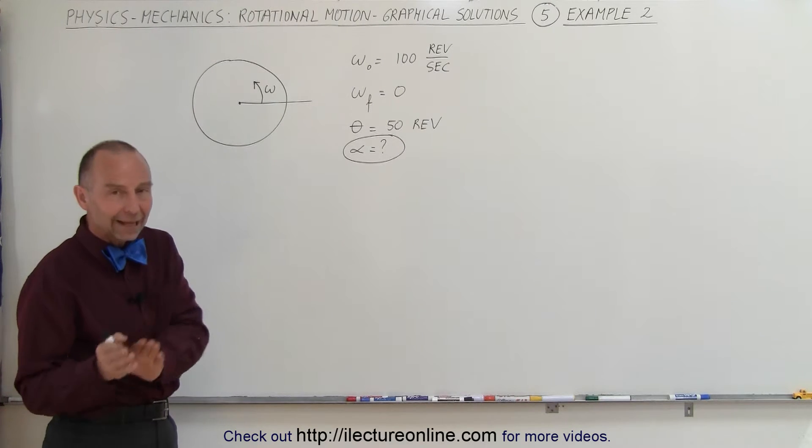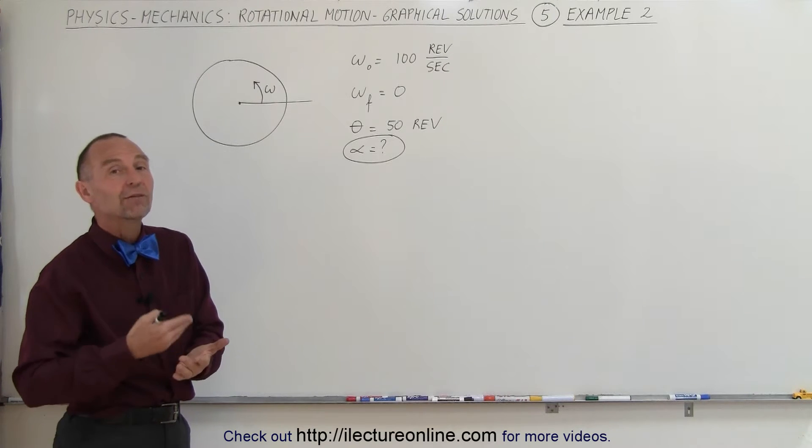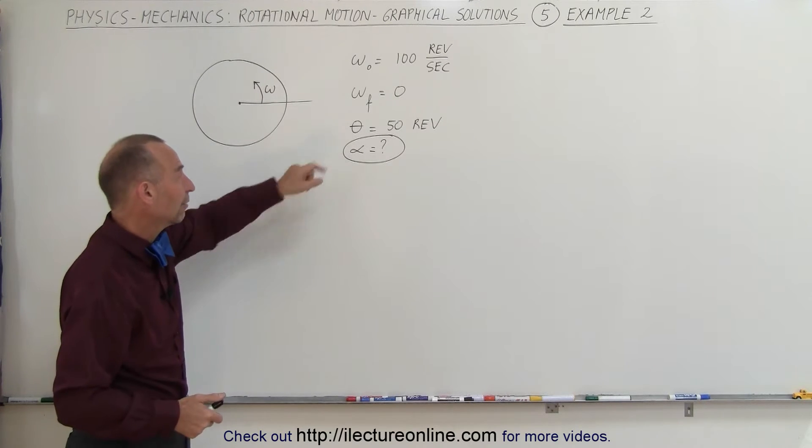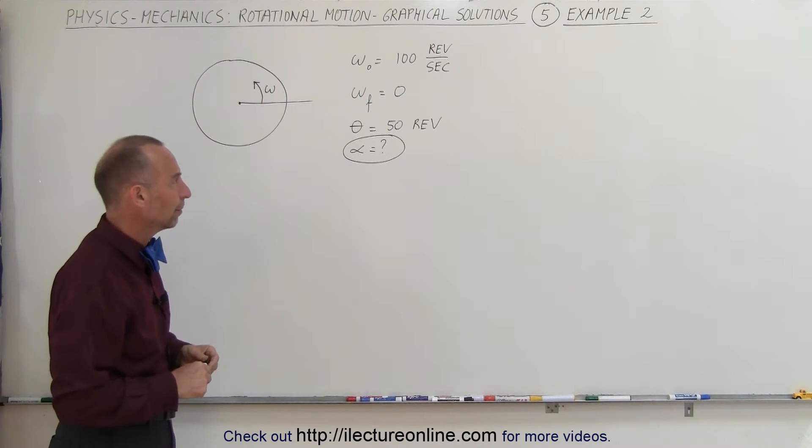Also notice that the units are given in revolutions rather than radians. We can probably get away with not having to convert if the answer is finally given in revolutions per second squared. If you want radians per second squared, we'll have to convert that as well.